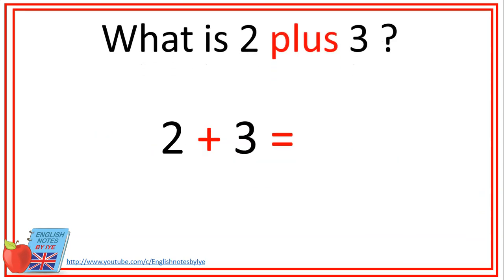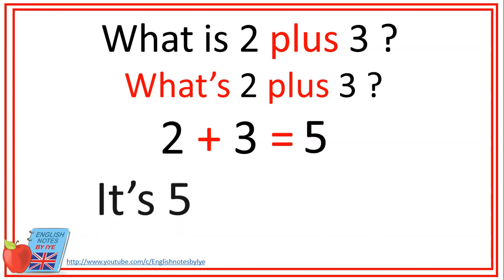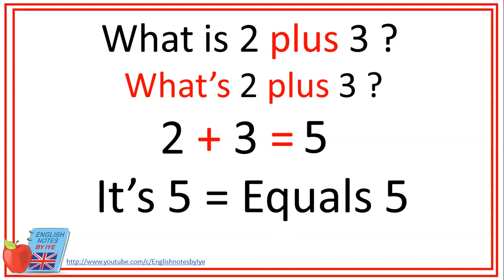Para hacer sumas en inglés, utilizamos el símbolo plus. Por ejemplo, what is 2 plus 3? O su contracción, what's 2 plus 3? Para decir la respuesta, podemos decir it's 5 o podemos decir equals 5.